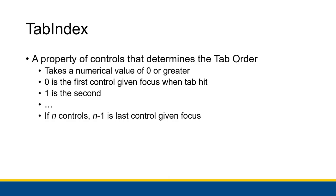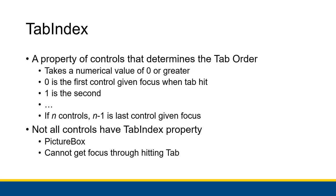Not all controls have a tab index property. For example, a picture box does not have a tab index property — you can't give it focus through tab at all. Only certain controls have tab index properties, and even if they do, that doesn't always mean they're going to get focus. For example, labels don't actually get focus. In that particular example, the only things getting focus were the text boxes and the buttons, so having a tab index property doesn't necessarily mean a control will get focus.